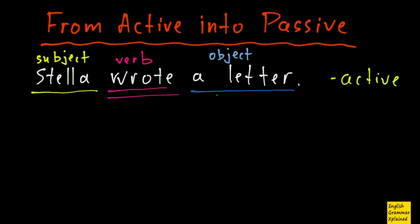So when I make passive voice, I place my object on the first position, here, a letter, and that will be my new subject.